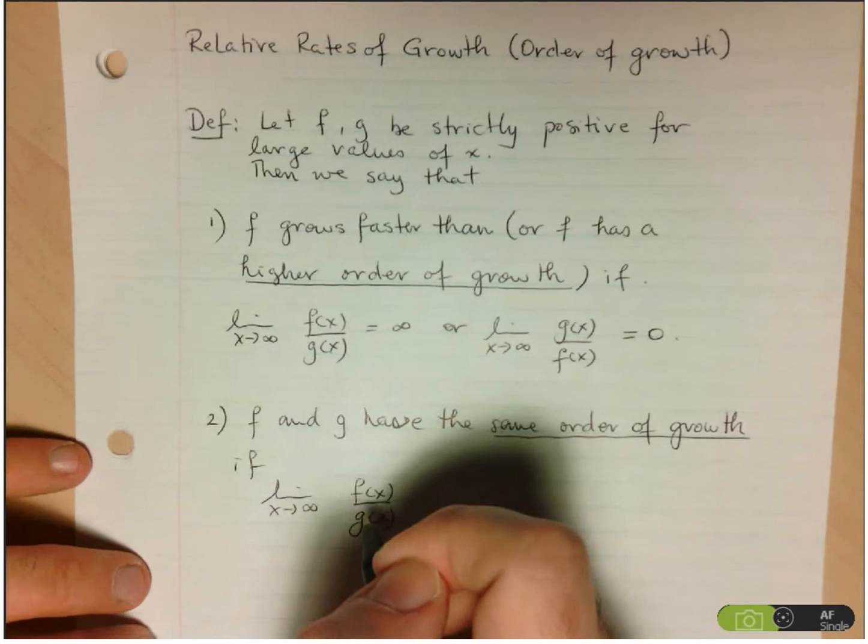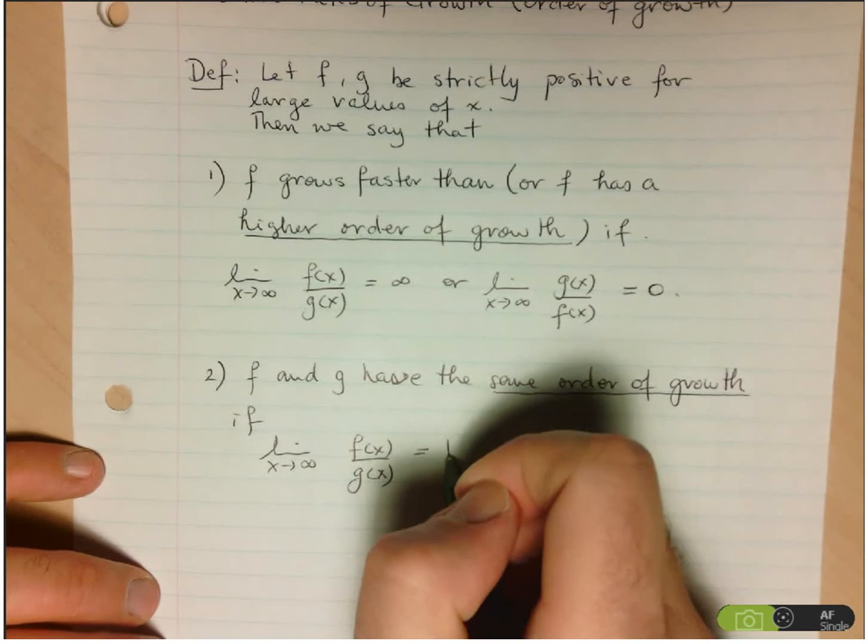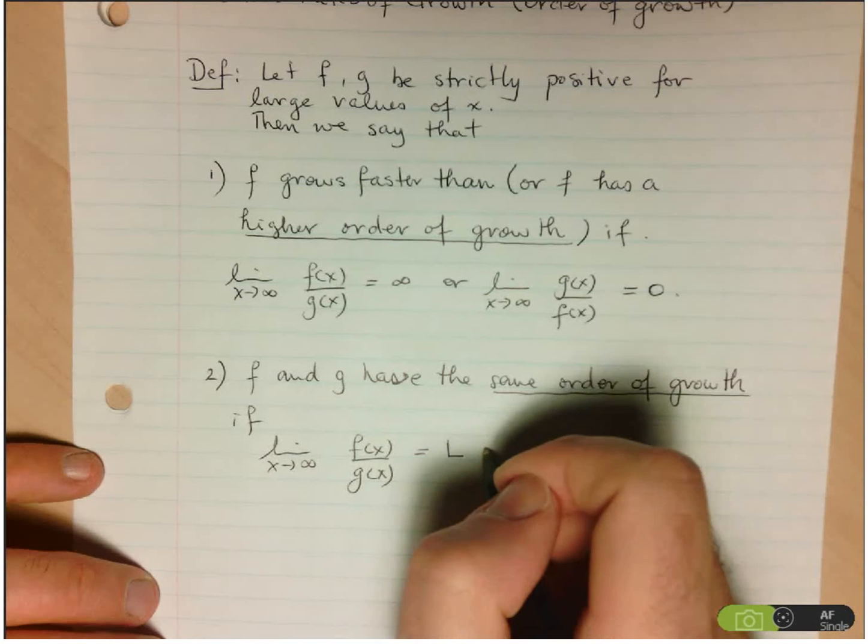Alternatively, you could have g at x over f at x, and we say that this needs to be equal to some constant, not equal to zero.